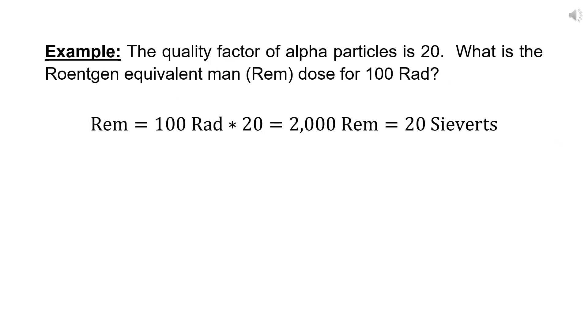For example, the quality factor of alpha particles is 20. What is the REM dose for 100 rad? In this case, REM equals 100 rad times the quality factor which is 20, which equals 2000 REMs, which equals 20 sieverts.